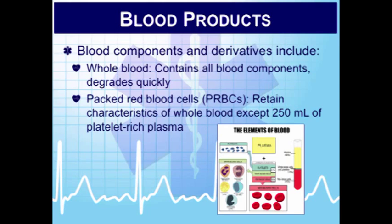Blood is always checked by at least two people so no mistakes are made. The universal donor is type O RH-negative blood, which can be given to any patient. This is important in trauma rooms and on helicopters where patients need blood rapidly. The RH factor is found on cell membranes. The HLA is found on cell membranes of platelets, white blood cells, and most tissue cells — patients receiving platelets from multiple donors are more likely to experience febrile transfusion reactions.